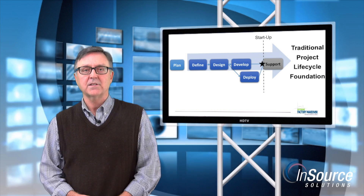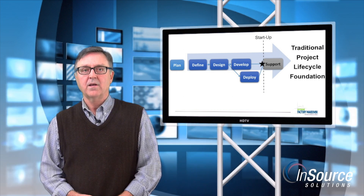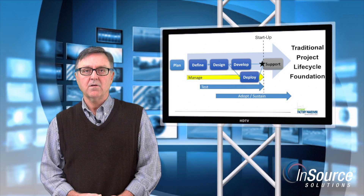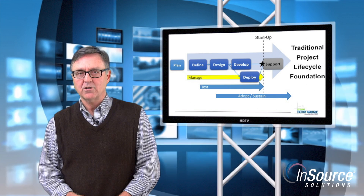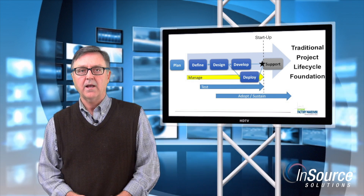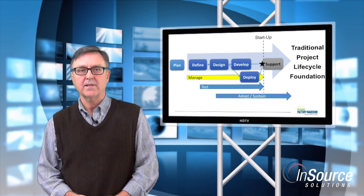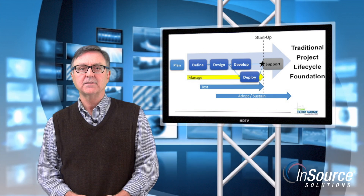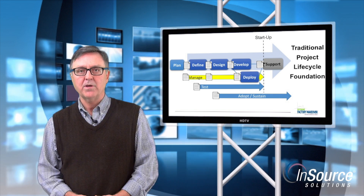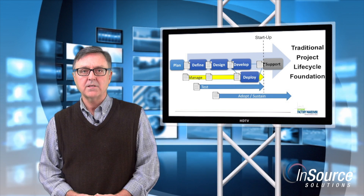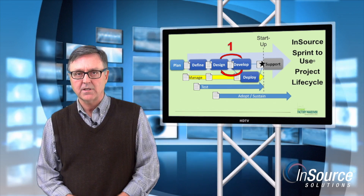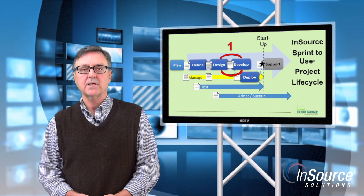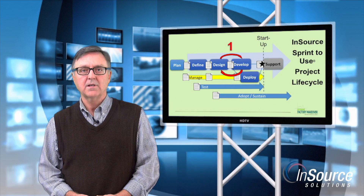There are five phases in our project methodology: define, design, develop, deploy, and support. Additionally, there are three project management processes that cut across all phases: manage, test, and adopt/sustain. On the surface, this looks like classic waterfall project methodology and it does reflect some best practices from traditional project management. For example, the project is broken into phases with clearly defined activities and a primary deliverable for each phase. The approval of the deliverable is the gate to signal phase completion and readiness to proceed to the next phase. Progress is easily measured and reported. But there are some distinct differences in our approach — we have incorporated the latest concepts in agile project execution and post-deployment sustainability.